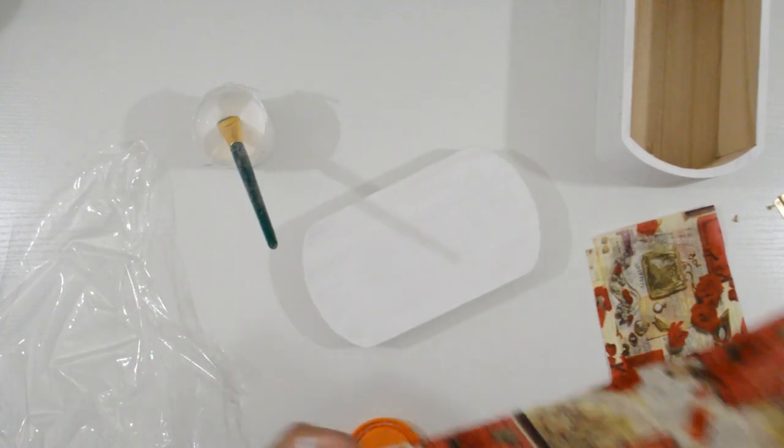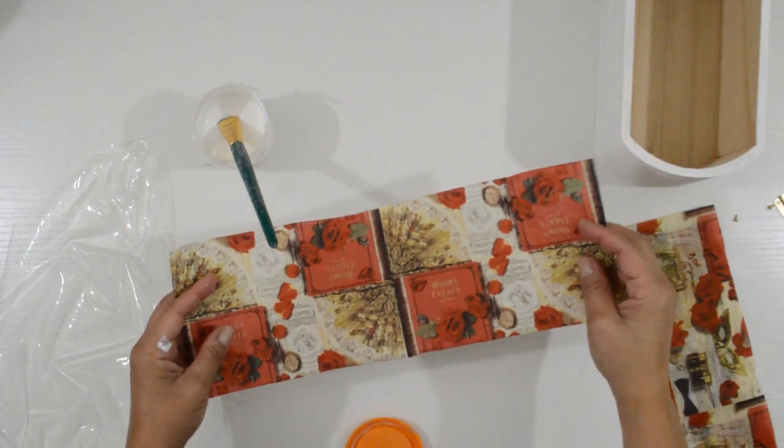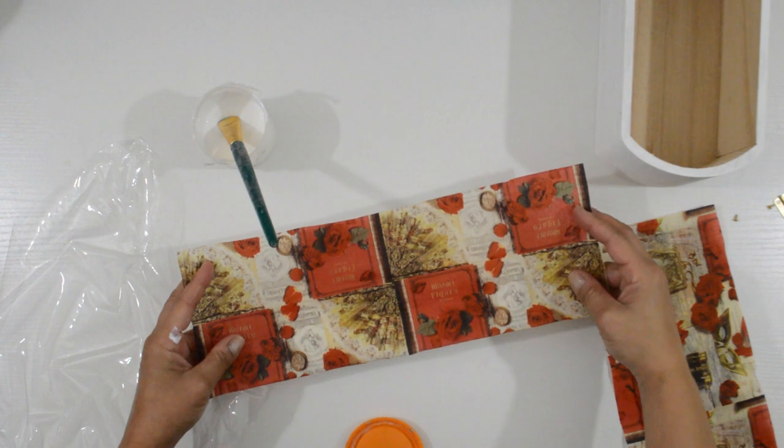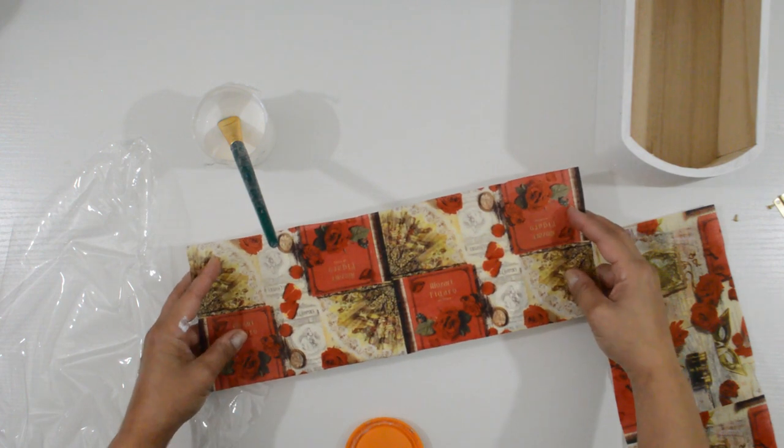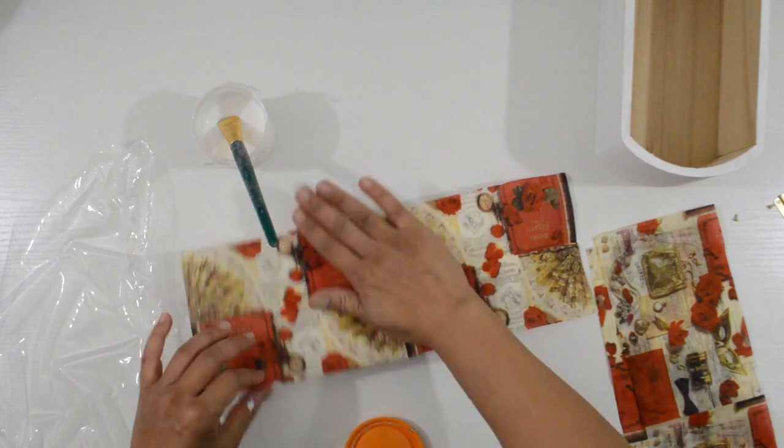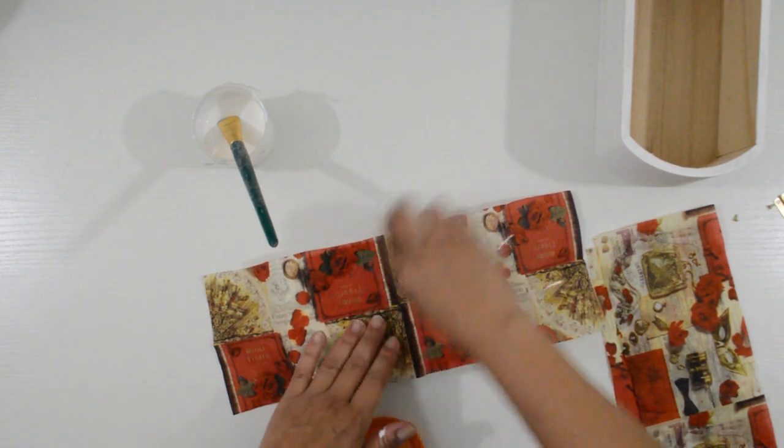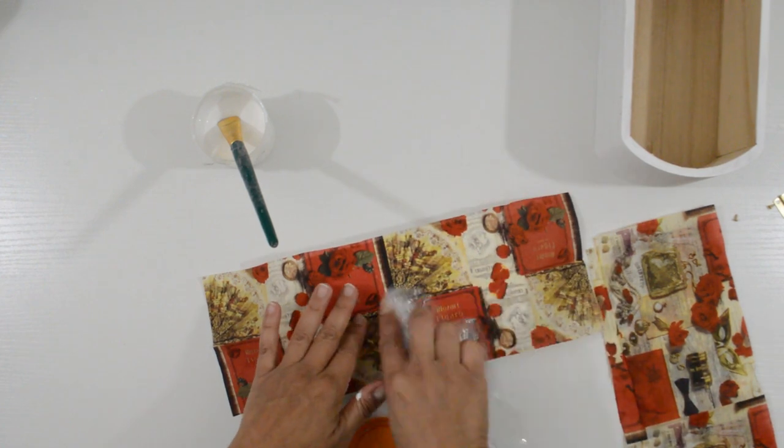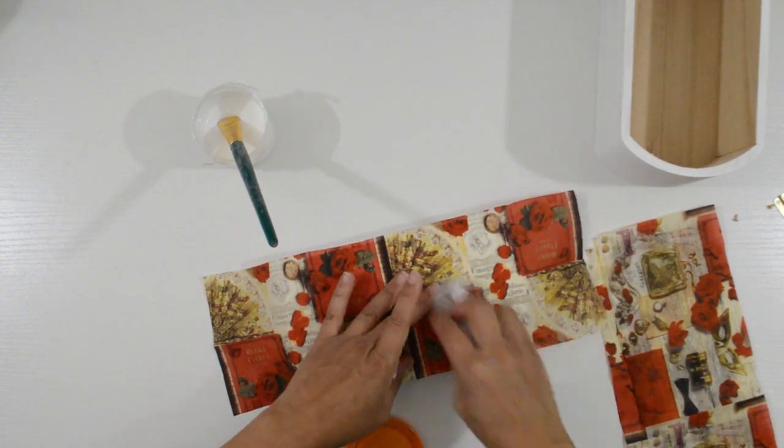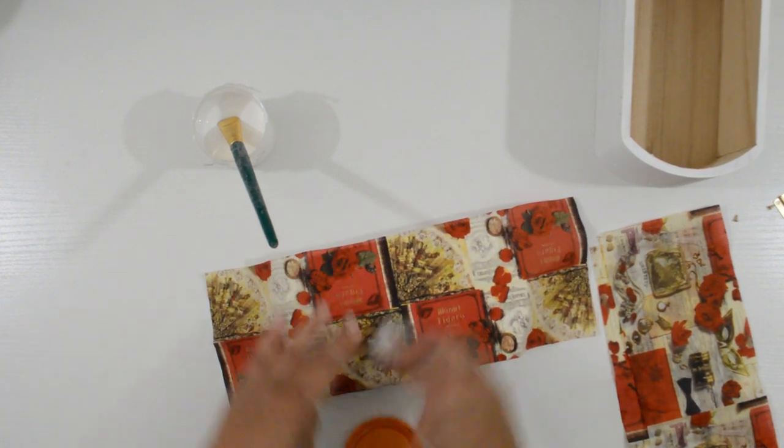Place the napkin and gently smooth it down. As a rule, you shouldn't lift the napkin once it's down. But because of my experience, I know when I can. If you find yourself wanting to lift it, go slowly to see if it will lift without ripping. If you see it's going to rip, stop and try your best to smooth it out with the crumpled up piece of cling wrap.